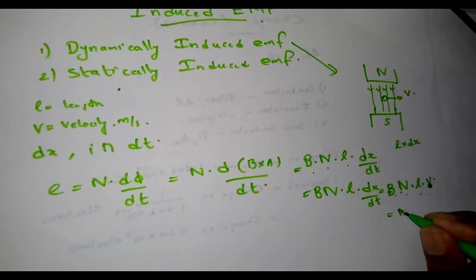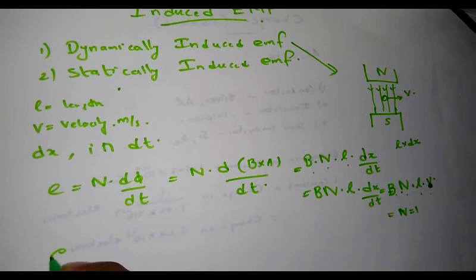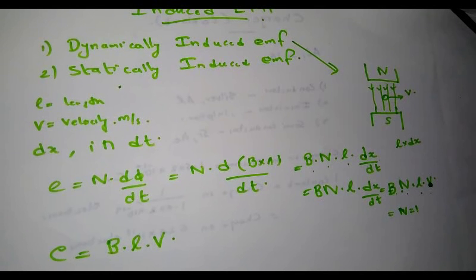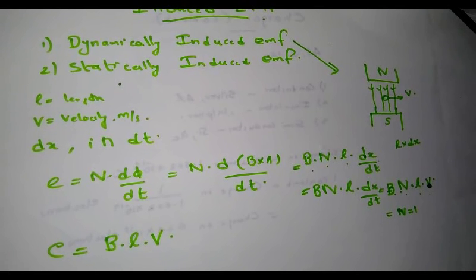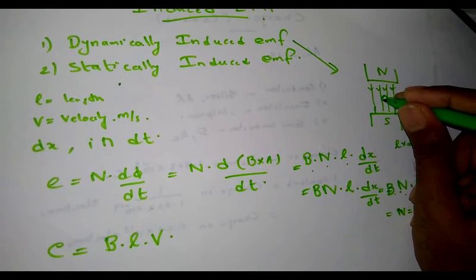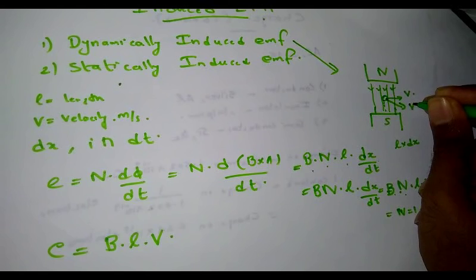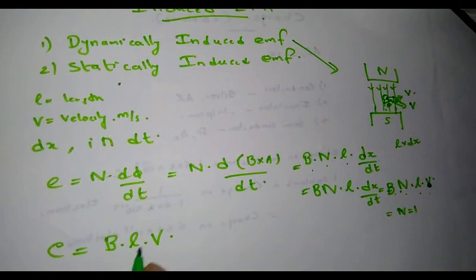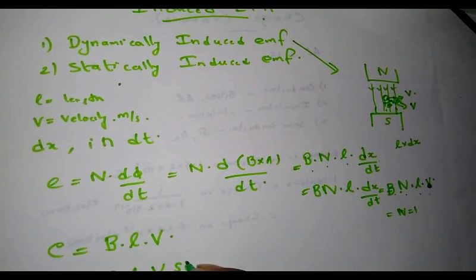If the number of turns N is equal to 1, then EMF induced equals B into l into v. This is the maximum value when the conductor is moved perpendicular to the field. If the conductor is moved at an angle theta to the magnetic field, then the induced EMF is given by E equals B into l into v sin theta.